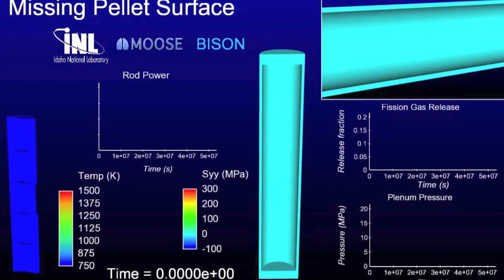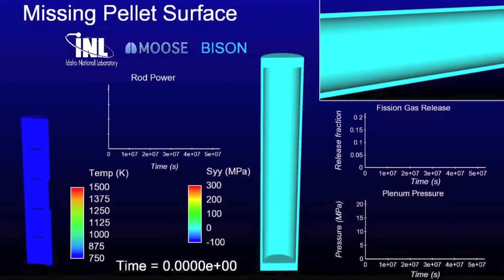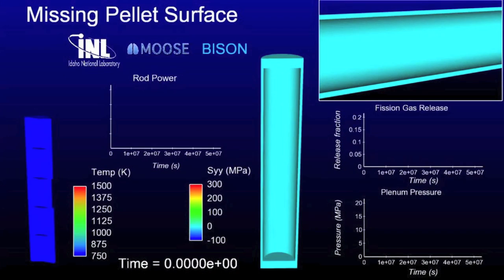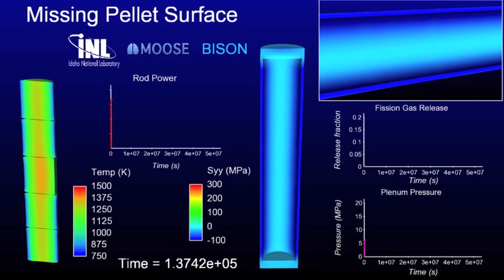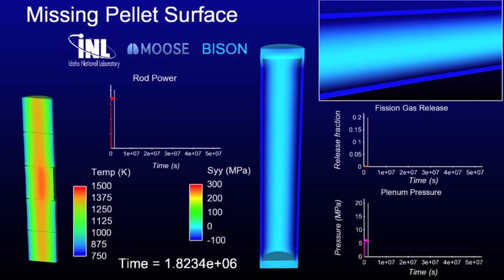So this is the missing pellet surface simulation. What we're looking at is a piece of a pellet here that has chipped away, either due to some manufacturing defect or maybe while it was in transport. But a piece of the pellet is missing, which you can see on the middle pellet there on the left.